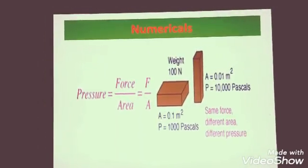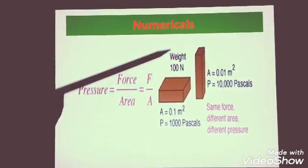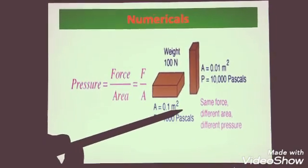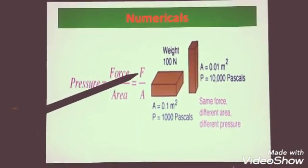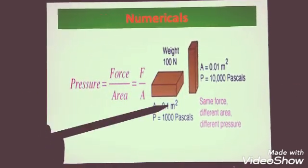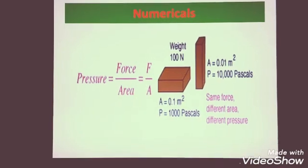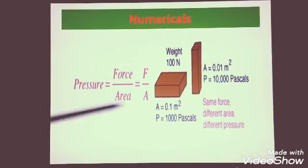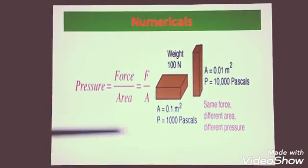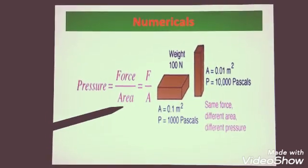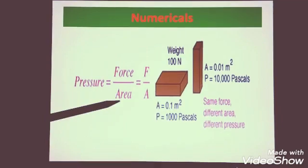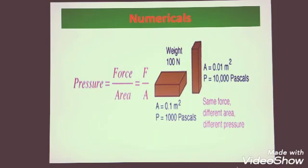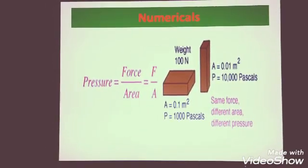I hope you have understood the units also. Now, we can also calculate pressure by using the formula force upon area. If you are given the force or weight as 100 Newton and the area is 0.1 meter square, how will you calculate pressure? By dividing force and area. By dividing 100 by 0.1 meter square, you get 10,000 Pascal as the pressure. In simple terms, if the force is 100 Newton and the area is 20 meter square, you divide 100 by 20 and you get 5 Pascal. Similarly, you can calculate area and force also. Area will be equal to force divided by pressure and force will be equal to pressure multiplied by area.